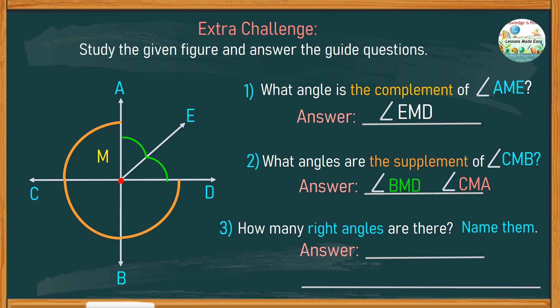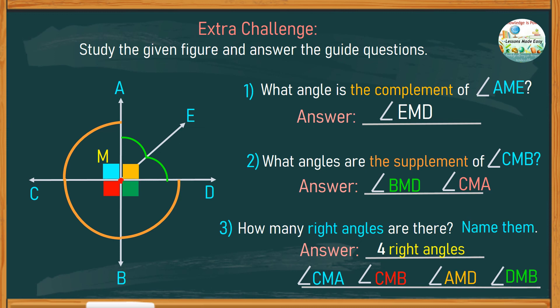Finally, how many right angles are there? The obvious answer is four right angles, and they are angles CMA, CMB, AMD, and DMB. And that's it. So, what do you think about this?